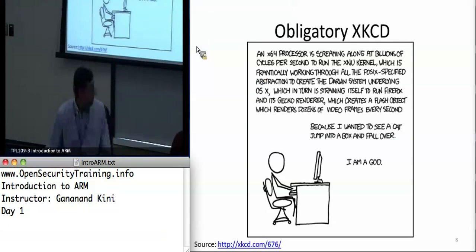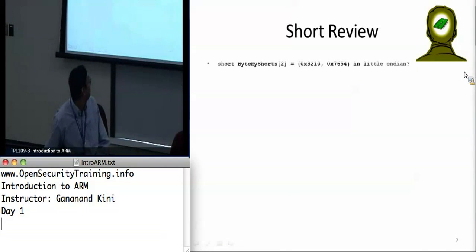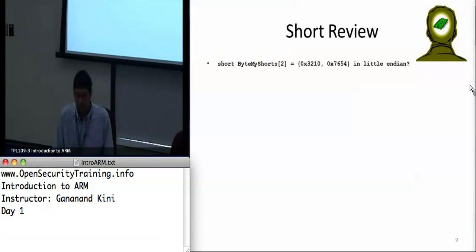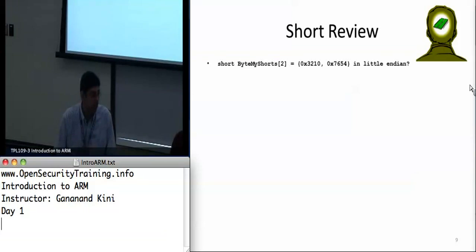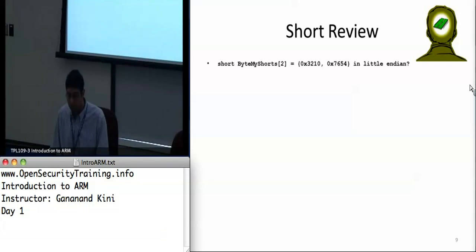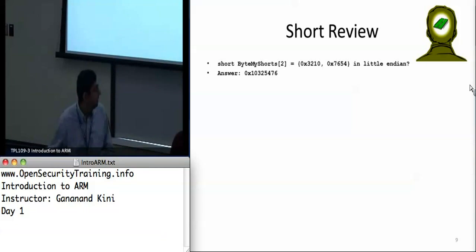I wanted to do a quick review of Intel x86 to get us in the mindset. Who wants to tell me the values in little-endian? Endianness is actually only related to how data is stored in or retrieved from memory. In this case, the hex values 3210 and 7654 — you have to reverse the byte order for each of the four words. What you get is hex 10325476. Any questions? Everybody pretty familiar with this?